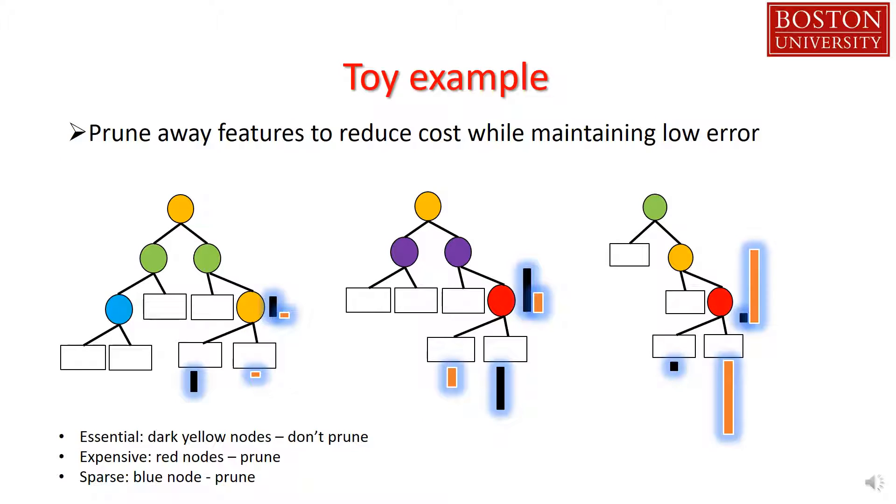So our goal is to prune the random forest to reduce cost while maintaining low error. For example, if the red feature is very expensive, we can prune the red nodes away and incur some error.